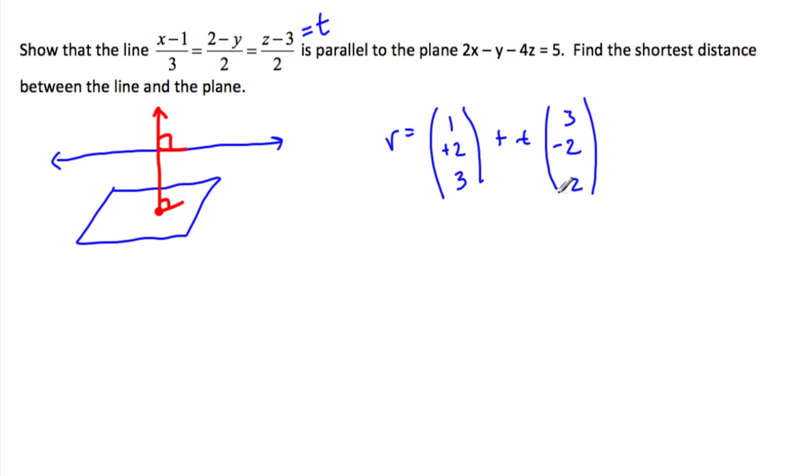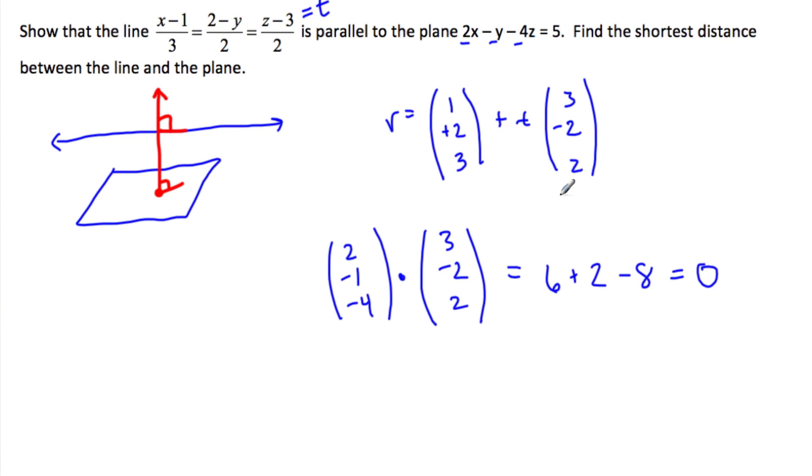So here's our direction vector of the line. Our normal vector is two, minus one, minus four. So let's take two, minus one, minus four, dot three, minus two, two. This should be zero, and if it is zero, that means that the line and the plane are perpendicular. So that's six, and then this is plus two, and this is minus eight, which is indeed zero. So we've now shown that they are parallel.